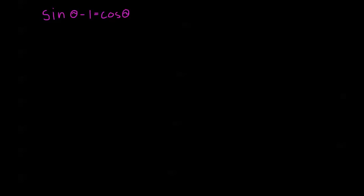As a last resort, whenever we're in a situation where nothing seems to work, we can try squaring both sides to get one of our identities. This is a last resort because we have to do some extra work at the end. So squaring both sides, the left-hand side becomes sine theta minus 1 squared, and the right-hand side becomes cosine squared theta.